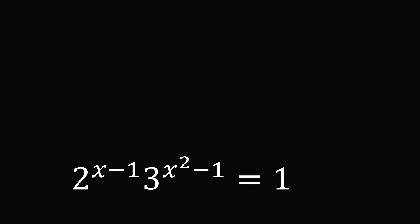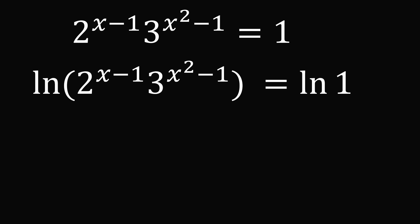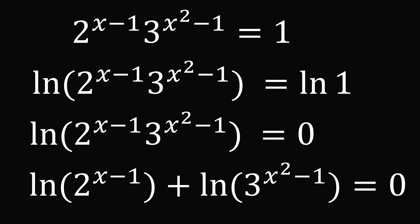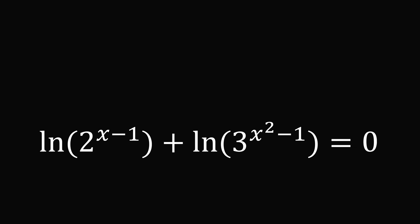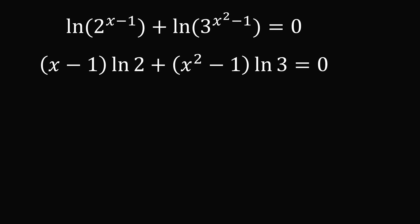We can now apply the logarithm to both sides of the equation — let's use the natural logarithm. The natural logarithm of 1 equals 0. We have the logarithm of a product of two terms, so this works out to the sum of the logarithms: the natural log of 2 to the power of x minus 1, plus the natural log of 3 to the power of x squared minus 1, equals 0. Bringing down the exponents: x minus 1 times ln 2, plus x squared minus 1 times ln 3, equals 0.